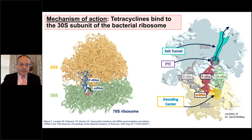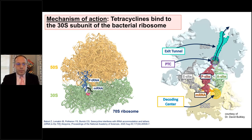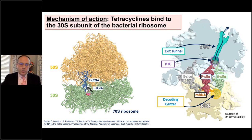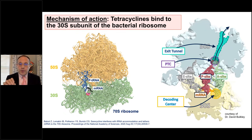Let's probe deeper into the mechanism of action. Tetracyclines bind to the 30S subunit of the bacterial ribosome. Here is a crystal structure of the 70S bacterial ribosome, with the 50S subunit on top and the 30S subunit on the bottom, showing messenger RNA and tRNA inside. The decoding center is the primary site where tetracyclines bind. The ribosome is where protein translation occurs.